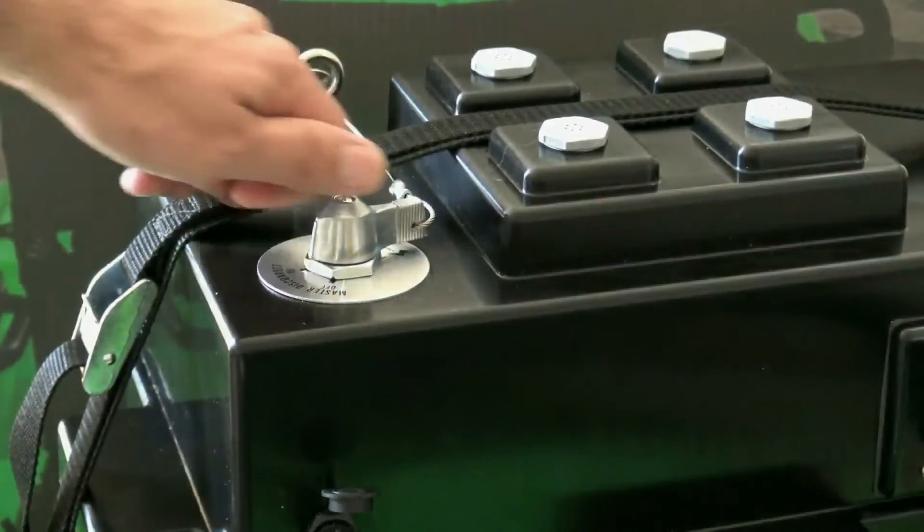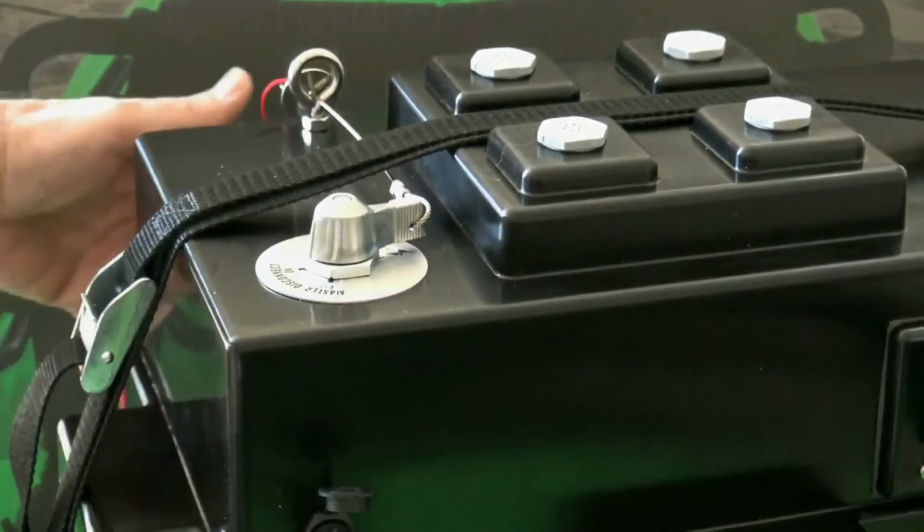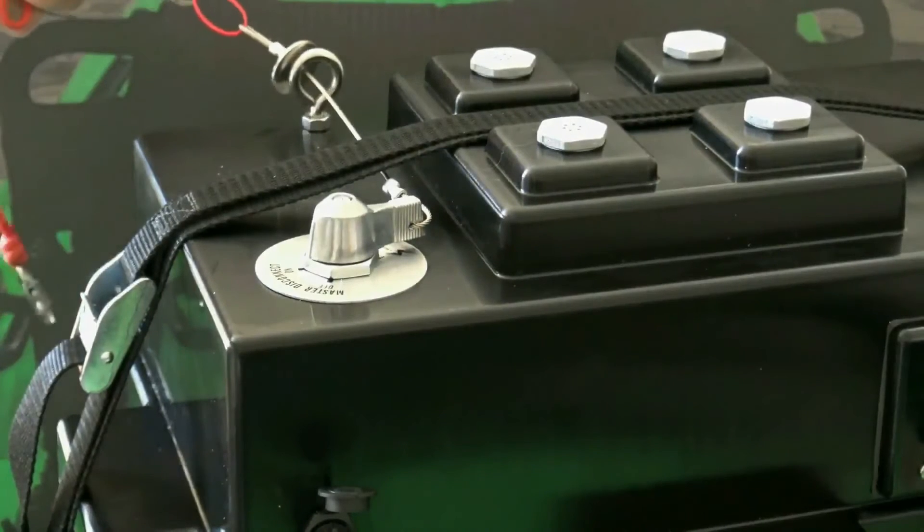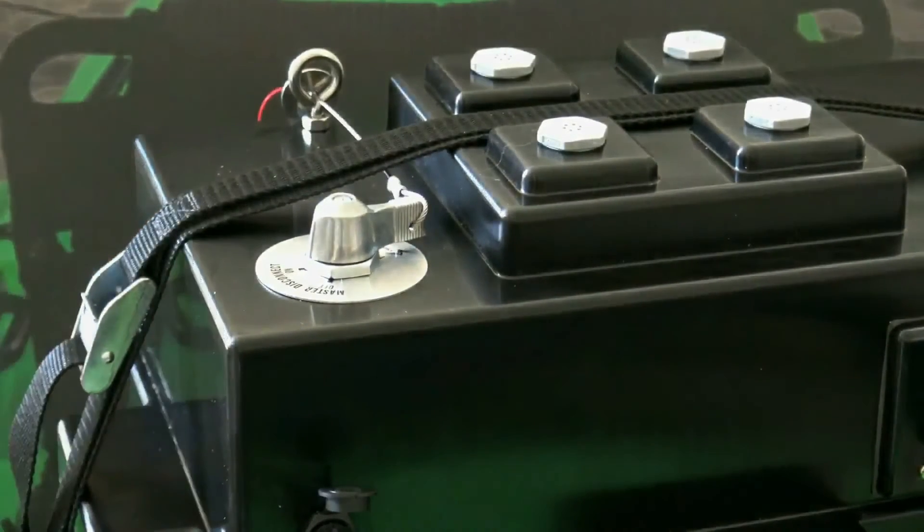A master power switch is found on the top of the lid. The switch also serves as an emergency kill switch for the entire system, attaching to the kayaker via a tear-away lanyard.